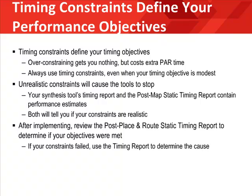After implementing, review the post-place and route static timing report to determine whether your performance objectives were met. If the timing constraints were not met, use the Timing Analyzer utility from the ISE software to generate a timing report. This will enable you to determine the cause of the timing failure. Causes can include too many logic levels — that is, LUTs in series — caused by poor HDL coding, a high fanout net delay, or even a need to pipeline the data path.